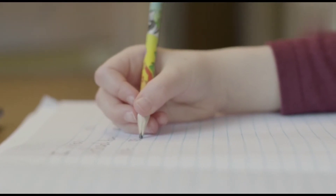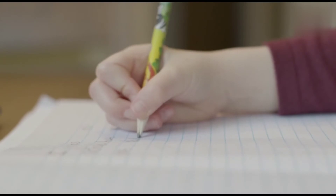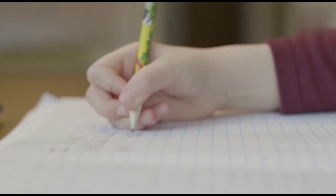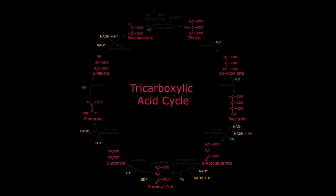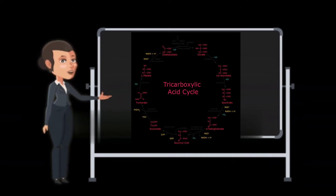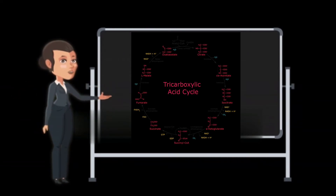The Krebs cycle was discovered by Sir Hans Adolf Krebs, which is why it is called the Krebs cycle. It plays a central role in the breakdown or catabolism of organic fuel molecules — that is, glucose and other sugars, fatty acids, and some amino acids.